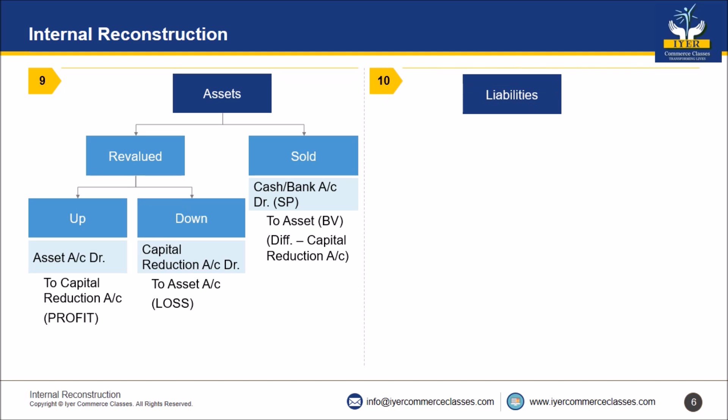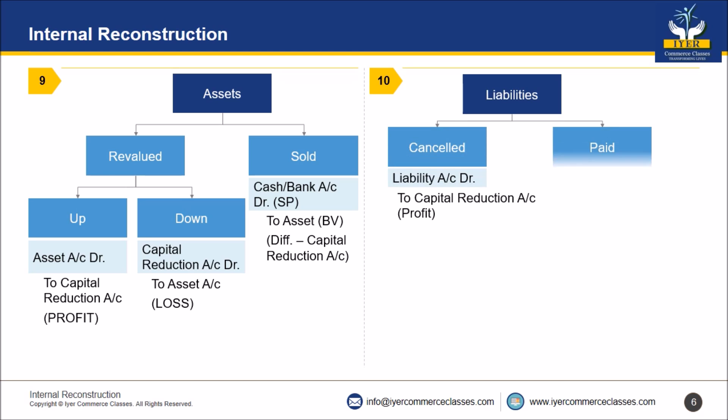The rule for liabilities: liabilities are either cancelled or paid. If cancelled, it is a profit for the company — entry will be Liability Account debit, to Capital Reduction Account. If the liabilities are paid, entry will be Liability Account debit, to Cash Account (or equity, preference, debentures as applicable). Any difference will go to Capital Reduction Account.